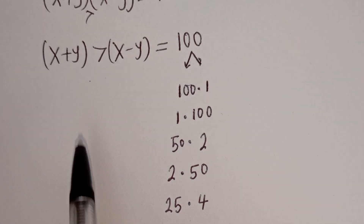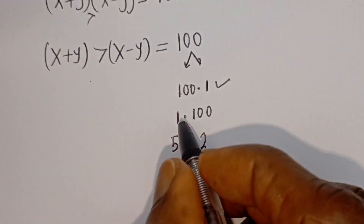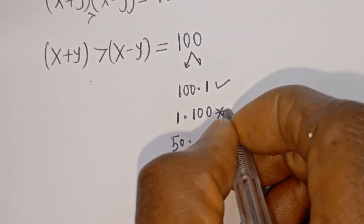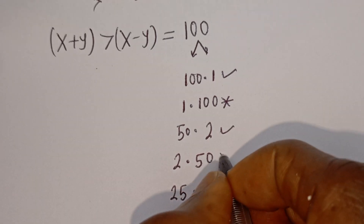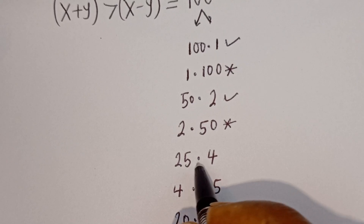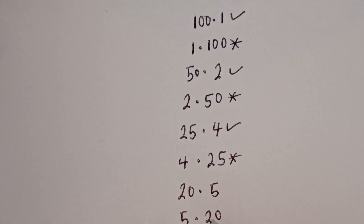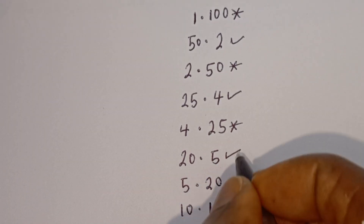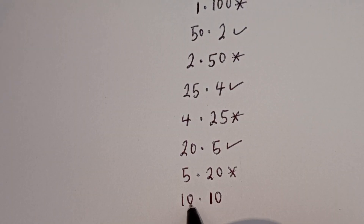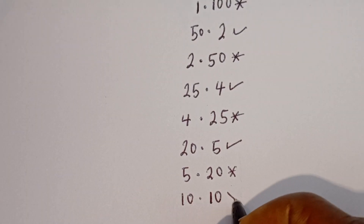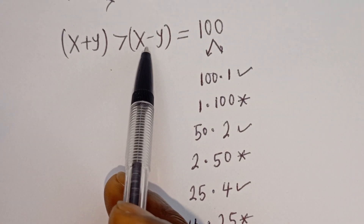We said X plus Y must be greater than X minus Y. So: 100 > 1 — accepted. 1 < 100 — rejected. 50 > 2 — accepted. 2 < 50 — rejected. 25 > 4 — accepted. 4 < 25 — rejected. 20 > 5 — accepted. 5 < 20 — rejected. 10 equals 10 — also rejected, because X plus Y must be strictly greater than X minus Y.